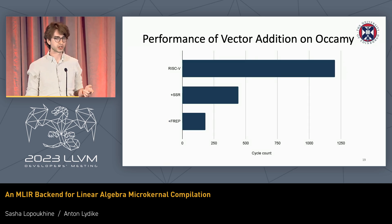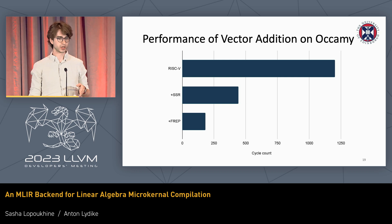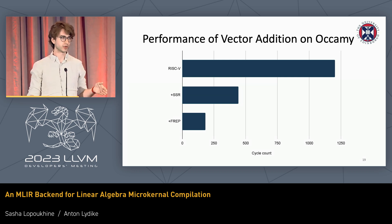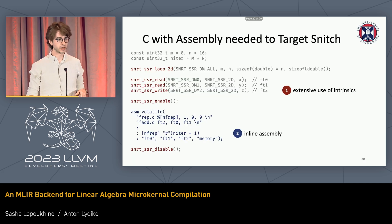This is what the performance looks like after those two introductions. With the standard LLVM output it's pretty slow, and the assembly we've written by hand is pretty fast. So how do we actually generate that assembly?